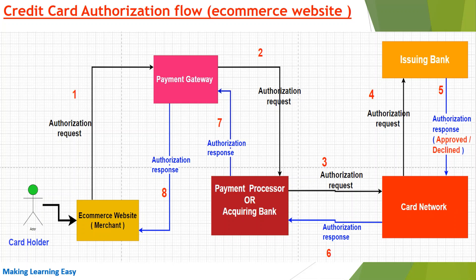The blue arrows show the response of the authorization process. At the bottom left is the cardholder, which is the customer. The customer visits the e-commerce website and wants to place an order. On the checkout page, the customer enters credit card details like credit card number, CVV number, name, and billing address. When the customer clicks 'Place Order', the merchant application sends the payment details to the payment gateway — this is step one.